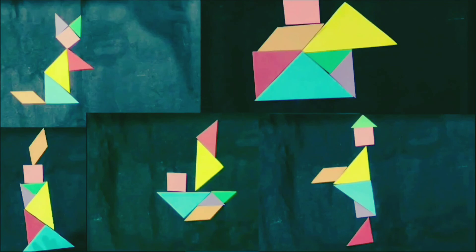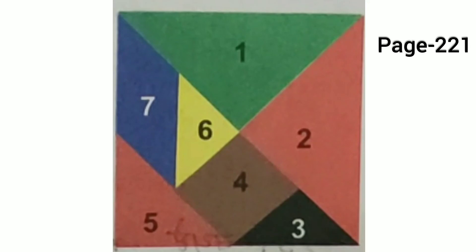Students, today we made different pictures by using 7 pieces of 10-gram. Students, in your maths book on page number 221, 10-gram is given. You have to cut these 7 pieces of 10-gram and make different pictures with the help of these 7 pieces.